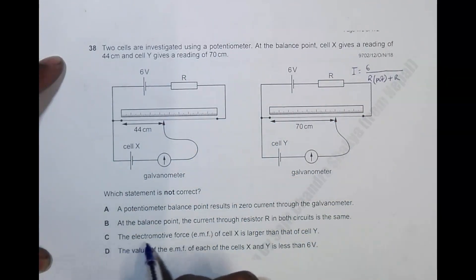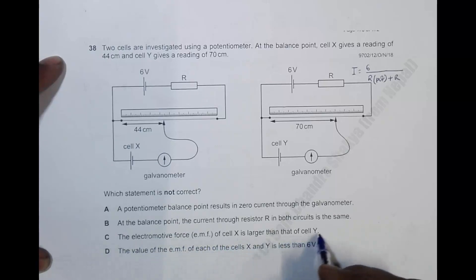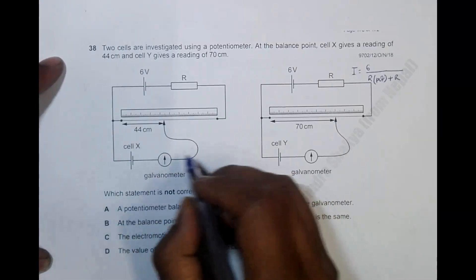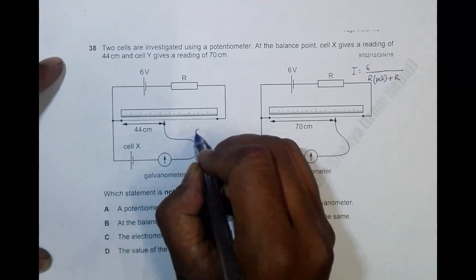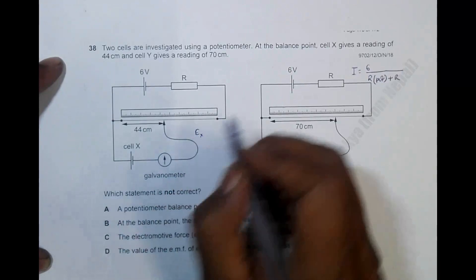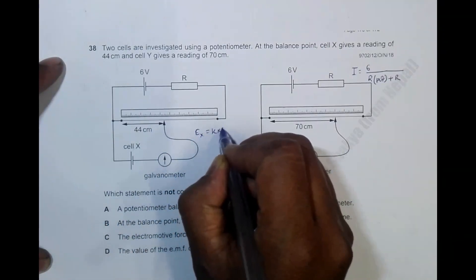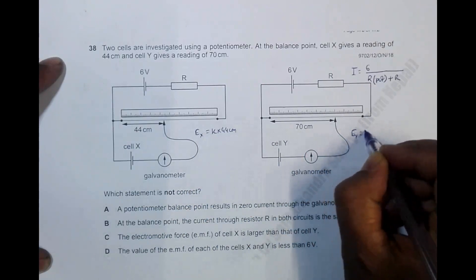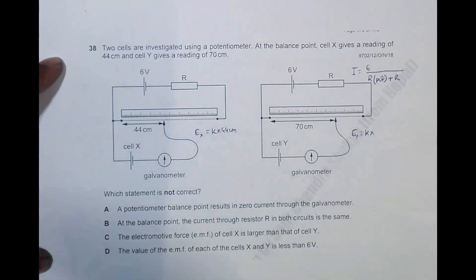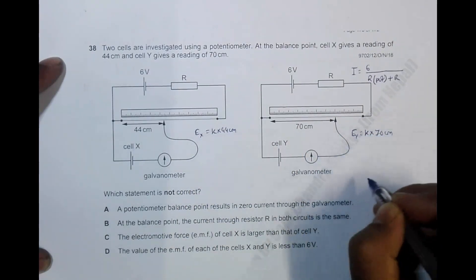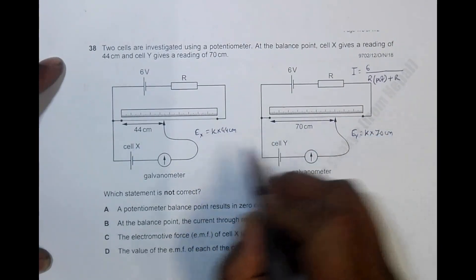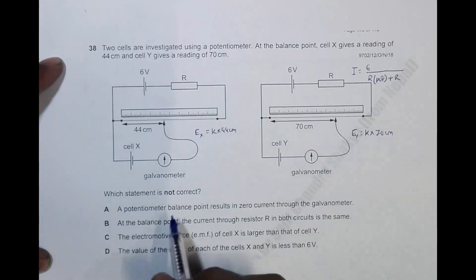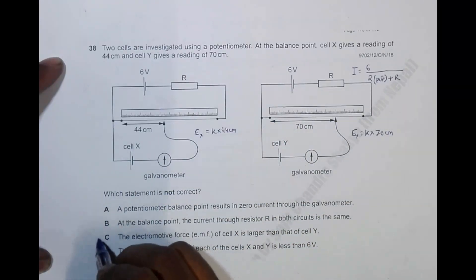Statement C says the EMF of cell X is larger than that of cell Y. This is not true. The EMF of X equals K × 44 cm, and the EMF of Y equals K × 70 cm. Since 70 is larger, EMF of Y should be more than EMF of X, not less. This contradicts the statement, so statement C is incorrect.